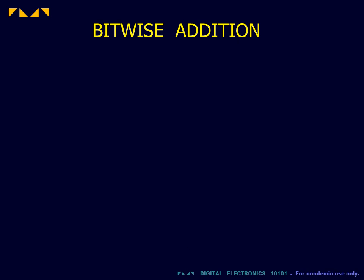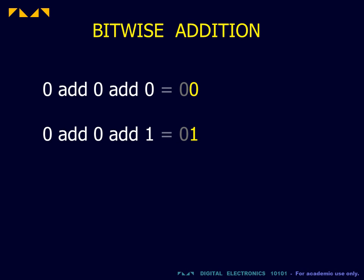The rules for the addition of three single bit numbers are as follows. The sum of three zeros is zero. If one of the numbers is one, the sum is one. If two of the numbers are one, then the sum is one zero, read as zero carry one.